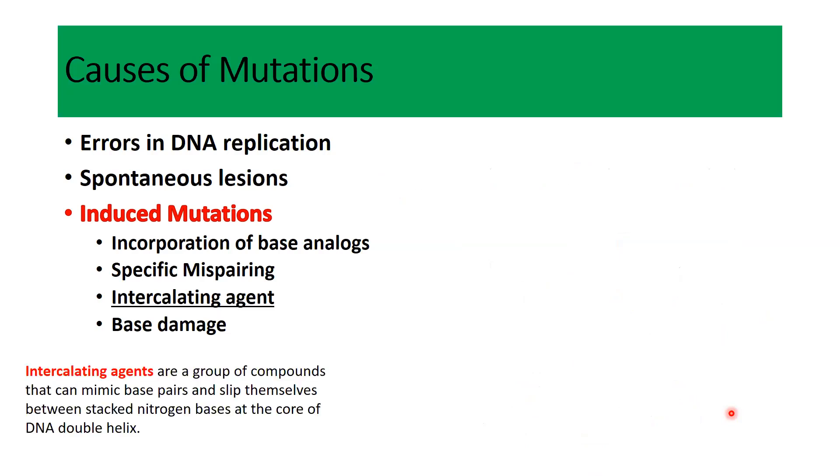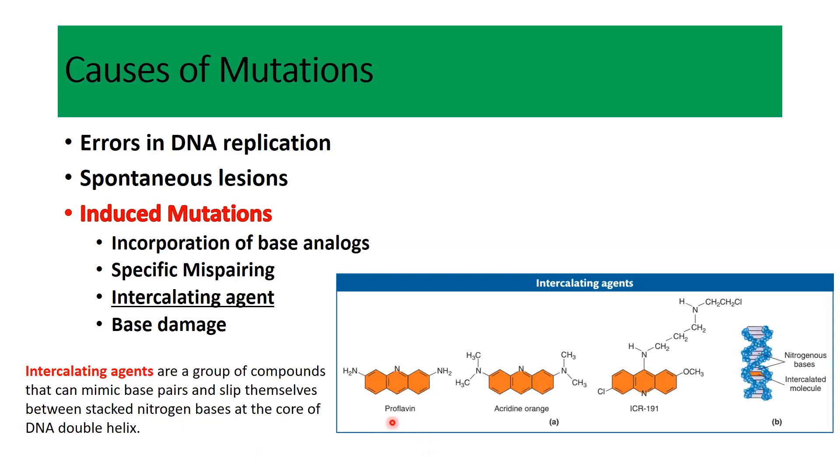Just like these analogues, there are some other compounds which can mimic the structure of normal nitrogenous bases and they can slip themselves between nitrogenous bases at the center of DNA double helix. These are some examples of these intercalating agents, for example proflavin, acridine orange, ICR-191. We can see here these are nitrogenous bases, these lines, and here is the intercalating agent which has intercalated itself between two stacked nitrogenous bases. Obviously this intercalation can lead to insertion or deletion of a single nucleotide pair.